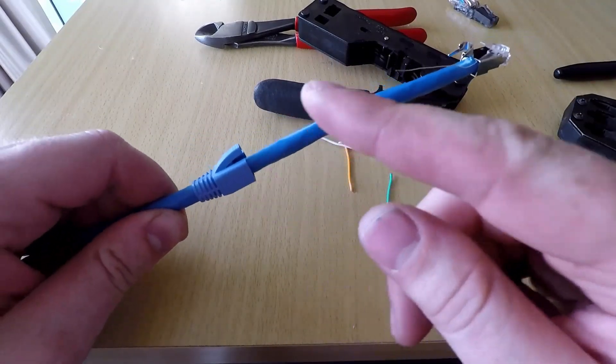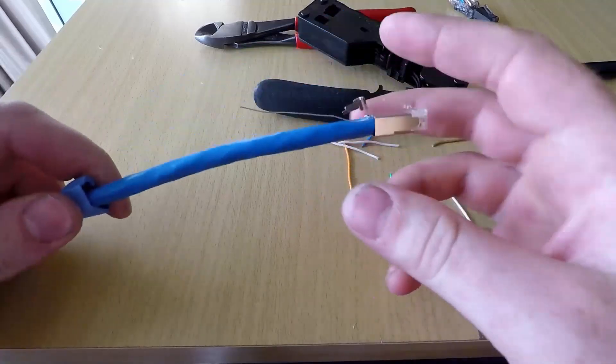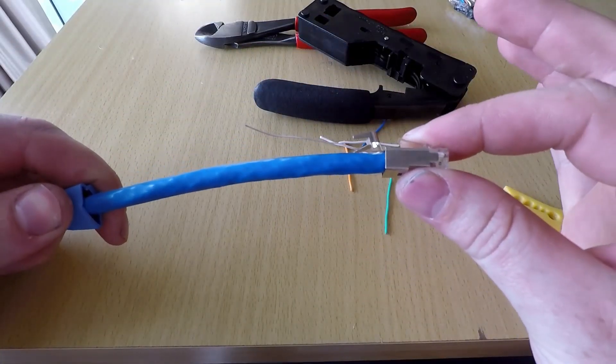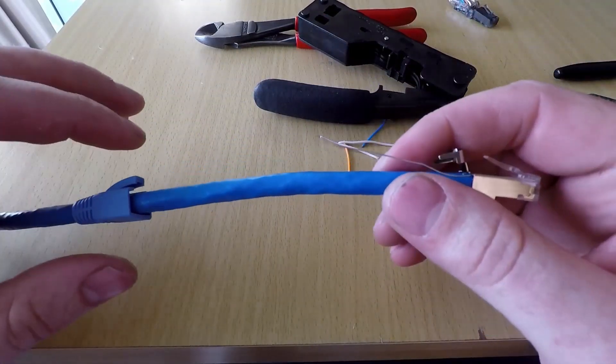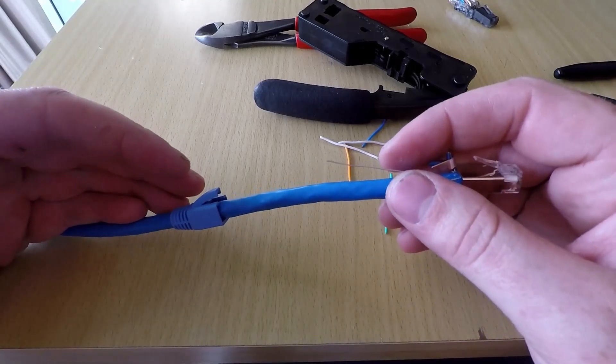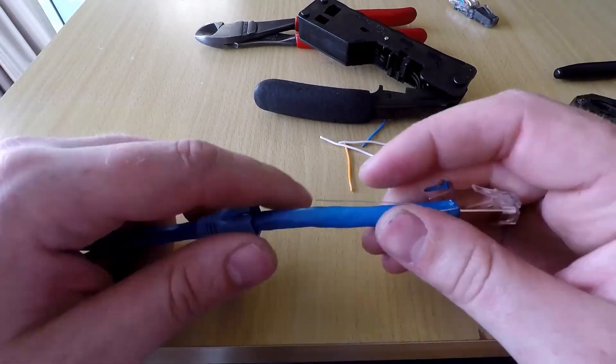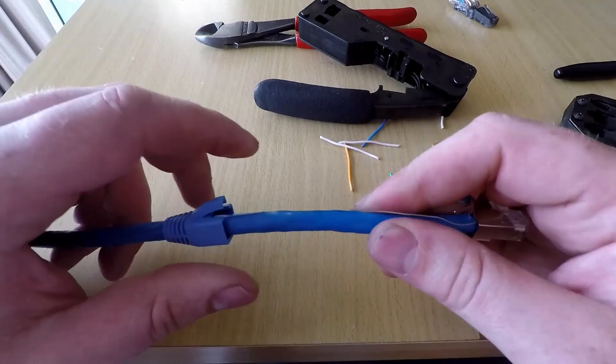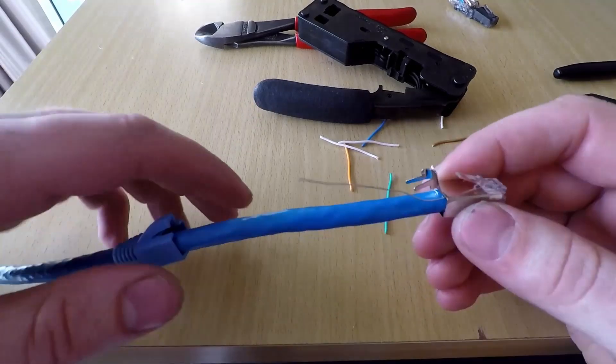One thing I didn't mention first was to make sure that you put the boot on the cable before you crimp this end up. Otherwise, you will have to start again, unless you're doing a patch lead, which you can just slide it on the other end. But always get into the habit of doing it. Otherwise, you'll screw it up someday.